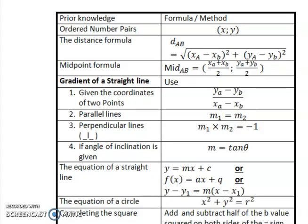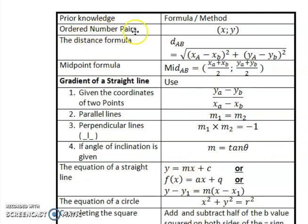Firstly we start off with things that we should know, things that should be in our toolbox at this point in time. Our prior knowledge will consist of a few items that we need to know. If we don't have this, then we won't have much success with this. First of all, ordered number pairs consist of an X and a corresponding Y value.